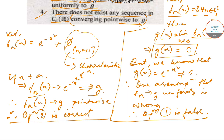Since option 2 is correct, option 4 — which states that there does not exist any sequence in CCR converging pointwise to G — is wrong, since we have already found that Fn(X), a sequence in CCR, converges pointwise to G. So therefore option 4 is false.